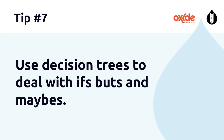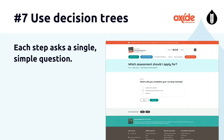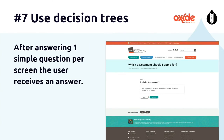Sometimes it's not the terminology that's difficult — it's lots of complicated criteria relating to different options. If you've got that situation, consider using a decision tree. Here's a decision tree we've created for the Australian Nursing and Midwifery Council. The purpose is to help prospective skilled migrants who have English as a second language understand which skills assessment is most relevant to them. Each step asks a single simple question, and after answering one simple question per screen the user receives their answer.